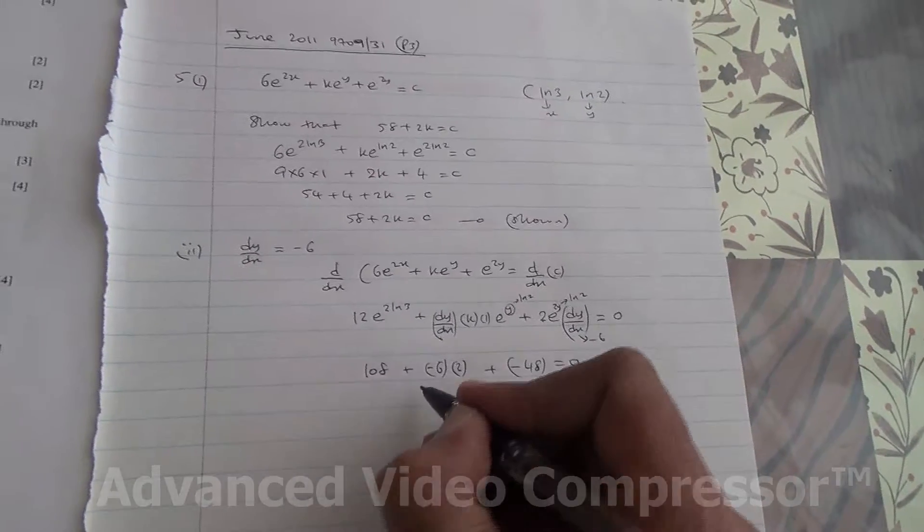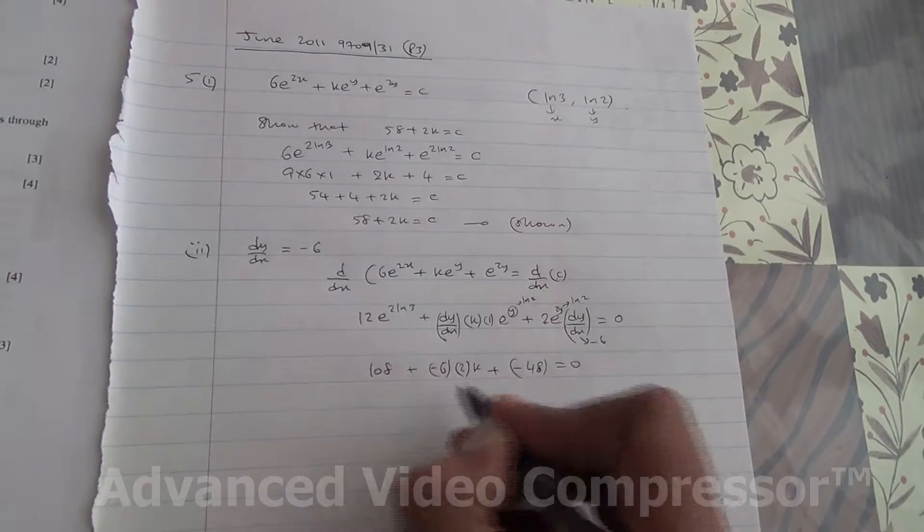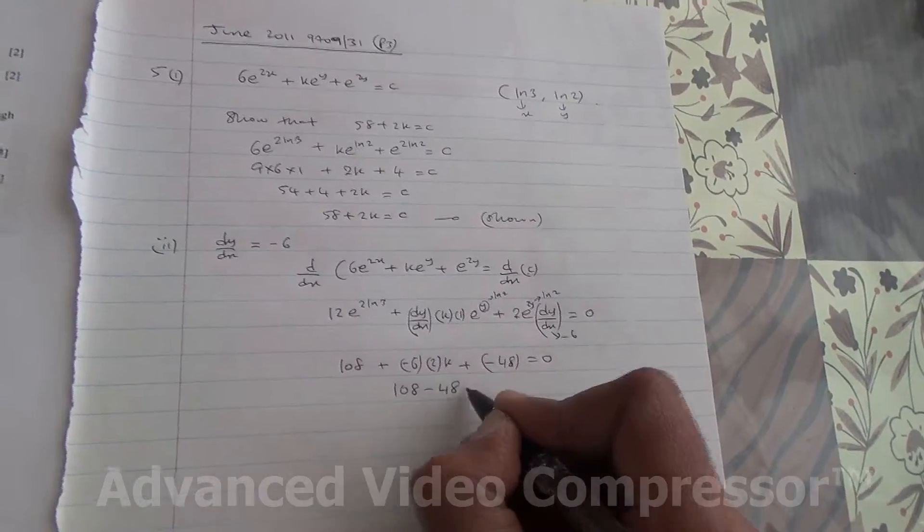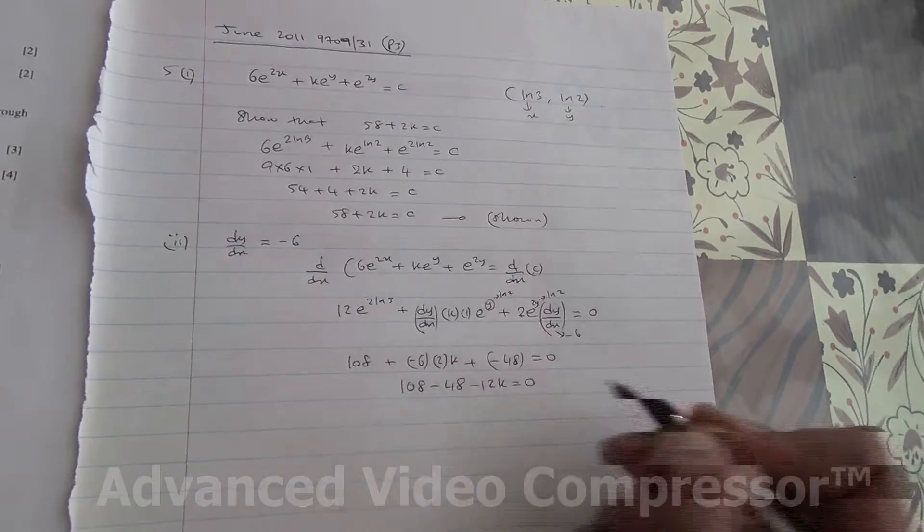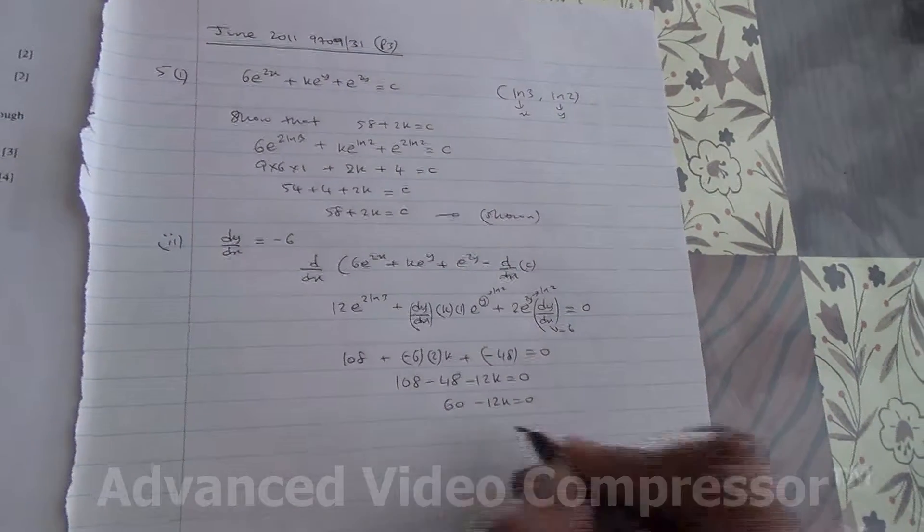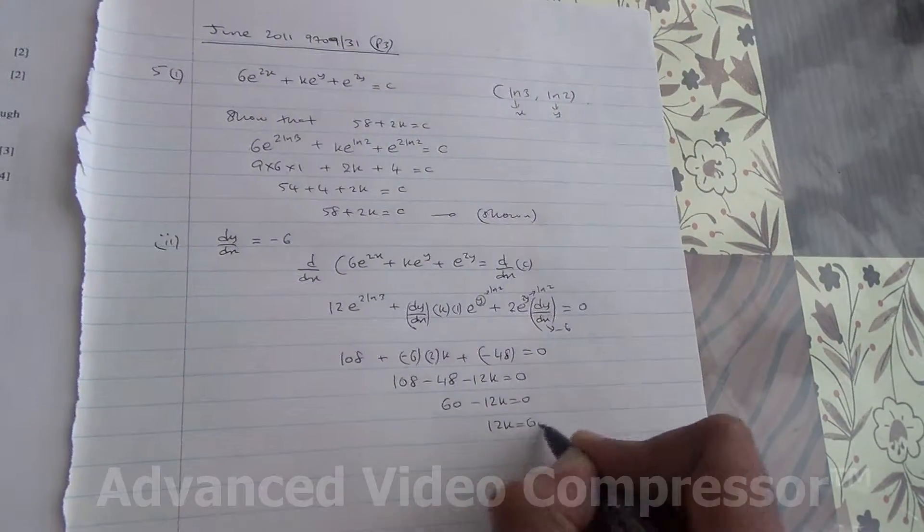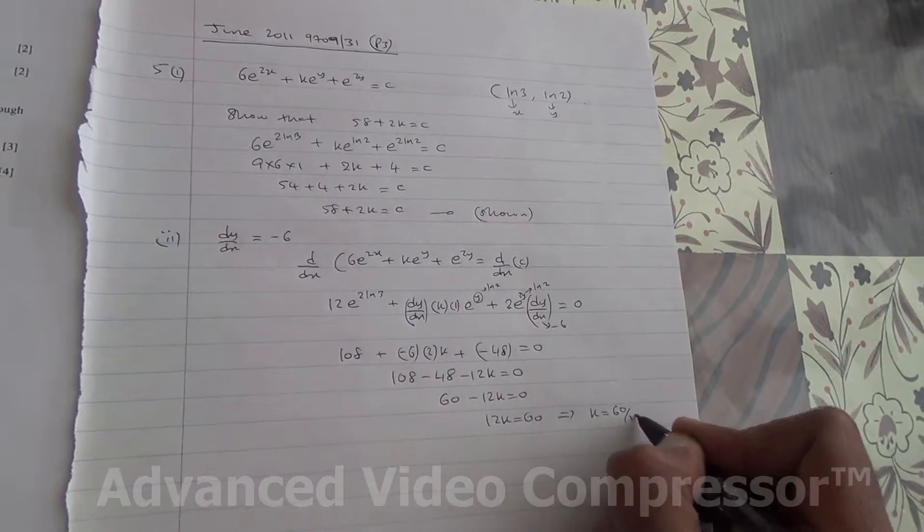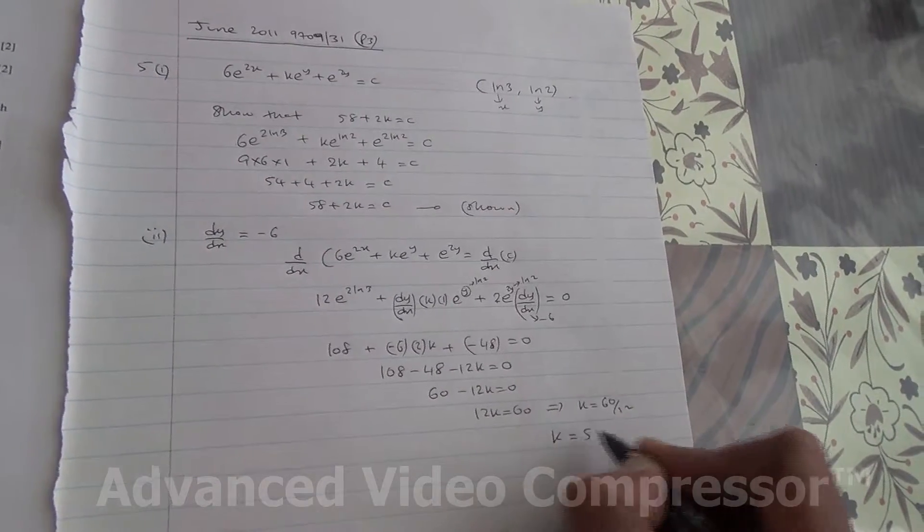Okay, so we've got then 108 minus 48 minus 12k is equal to 0. This gives us 60 minus 12k is equal to 0. 12k is equal to 60, meaning that k is going to be 60 divided by 12. Therefore k is equal to 5.